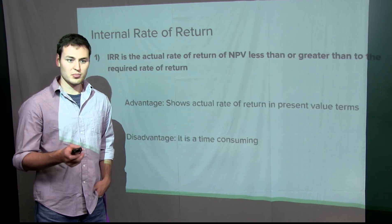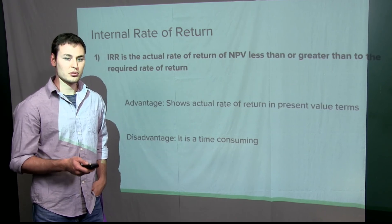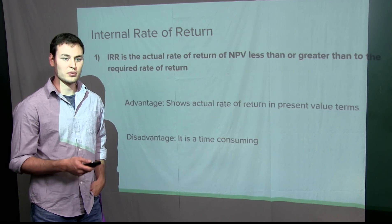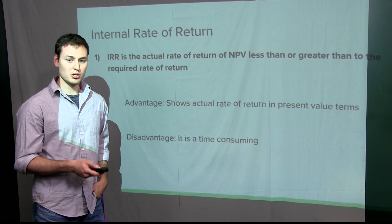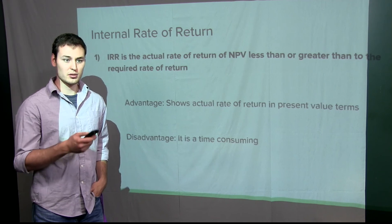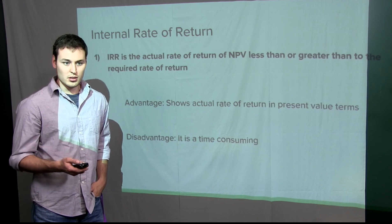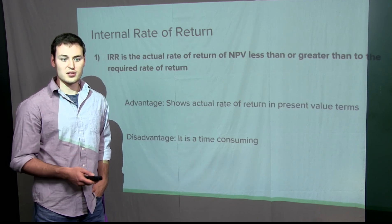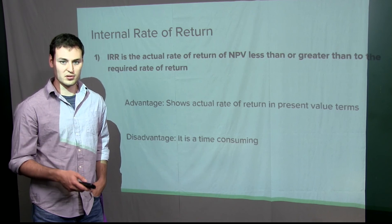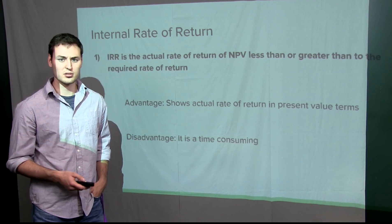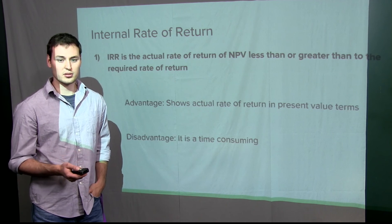Our last measure is the internal rate of return. This is the actual rate of return that we receive — where net present value gave us the dollar value, the internal rate of return gives us the actual rate of return. The advantage is that it shows the actual rate of return in terms of the present. The disadvantage is that it's often difficult to compute and time consuming.